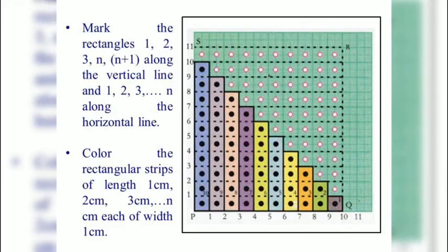Mark the rectangles 1, 2, 3, n, n plus 1 along the vertical line and 1, 2, 3 up to n along the horizontal line. Color the rectangular strips of length 1 cm, 2 cm, 3 cm up to n cm, each of width 1 cm.